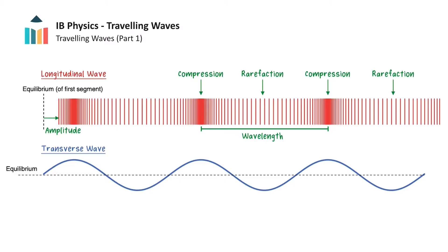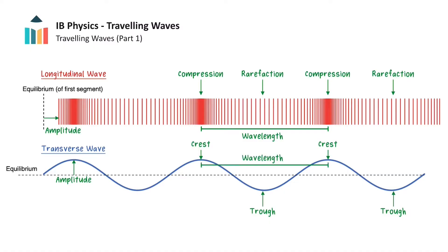These same concepts can be applied to transverse waves as well. The highest points of the wave are called crests, and the lowest points are called troughs. The height of the crest is the maximum displacement that a particle in the medium can reach from its equilibrium position, so the height of the crest is the amplitude of the wave. The crests and troughs alternate, and the pattern repeats, so the distance between any two adjacent crests or two adjacent troughs will be equal to the wavelength.